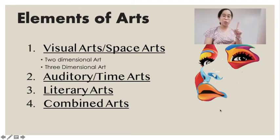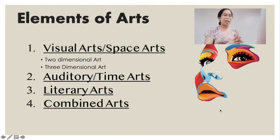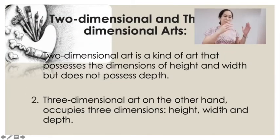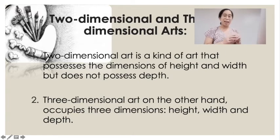First, we have the visual or the space arts. This is divided into two categories: the two-dimensional art and the three-dimensional art. The two-dimensional art is defined as a kind of art that has height and width, but does not have depth. The three-dimensional art has the height, the width, and the depth.